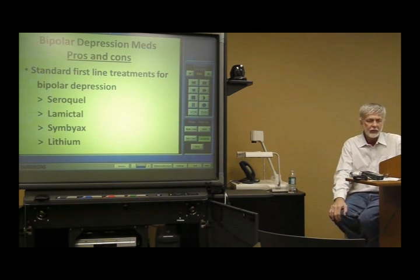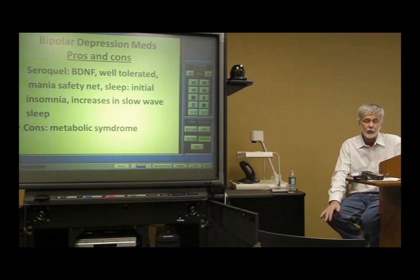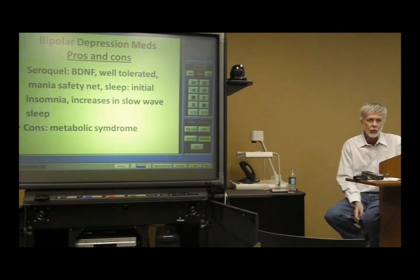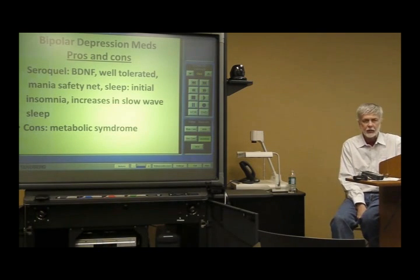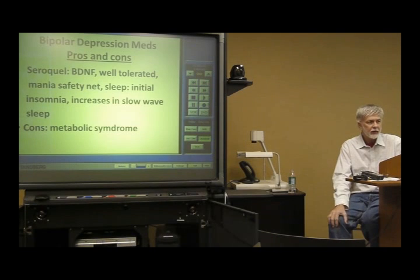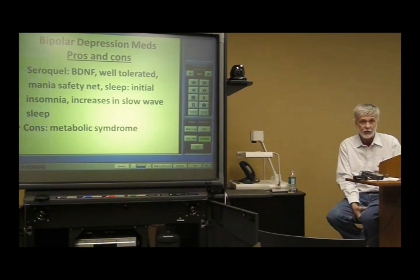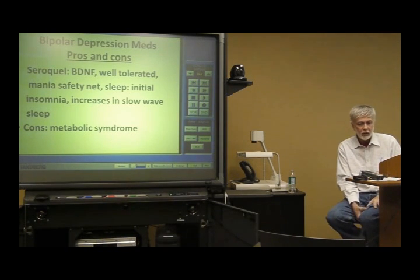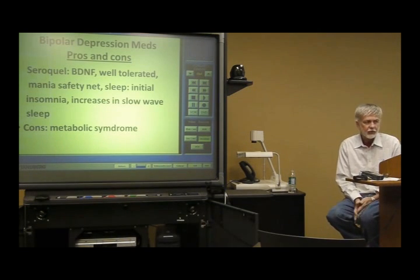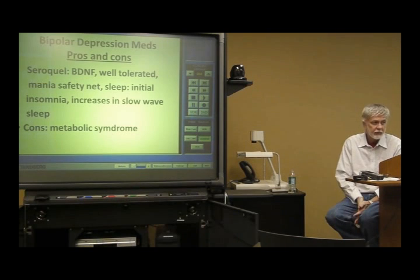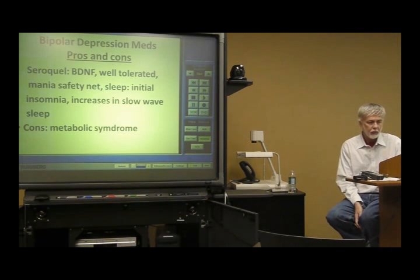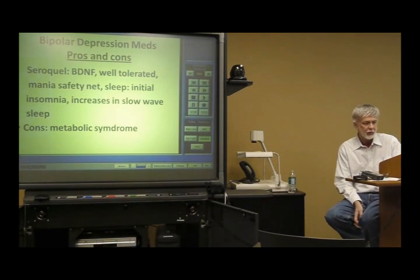So let's look briefly at the four major choices here. First off, Seroquel. Well, there's a reason that's moving to the top of the list for the following reasons, some of which we talked about in class earlier. It's the only antipsychotic that increases brain-derived neurotrophic factor. It's well tolerated compared to the other drugs. It is anti-manic, so it's kind of a safety net. In case somebody flips into a mania, it may prevent that. It's beneficial to sleep - you can really put people to sleep, but very importantly, it increases slow-wave sleep, which is what you really want to do, especially in long-term treatment of bipolar disorder. The downside is, of course, metabolic syndrome. And that can, over the long run, be really dangerous in terms of health consequences.